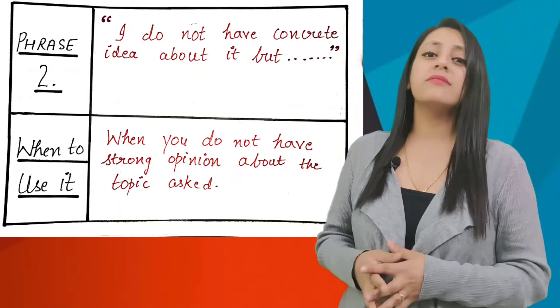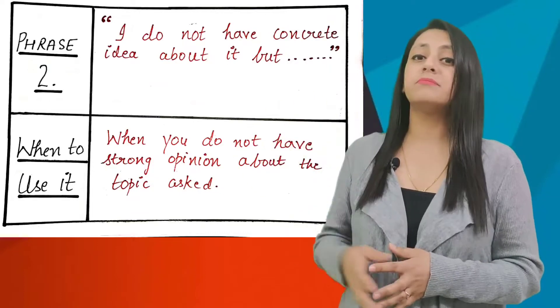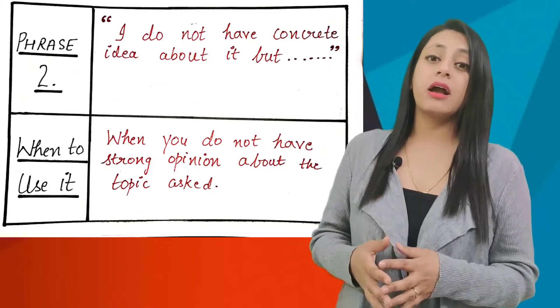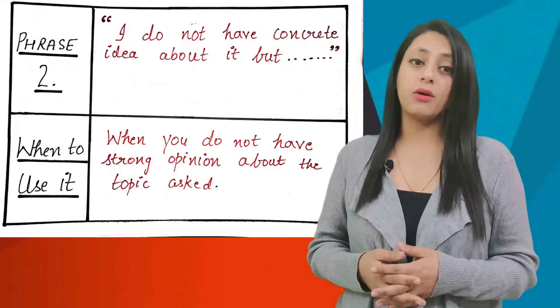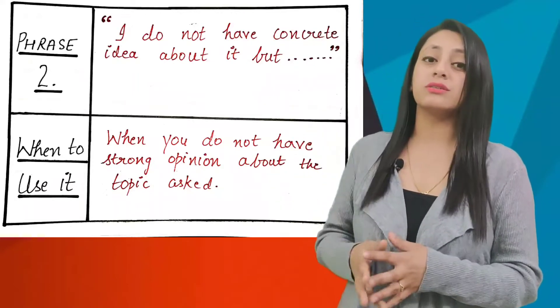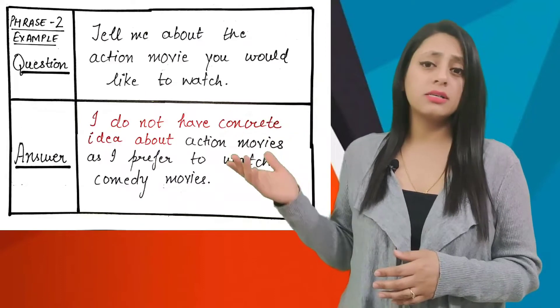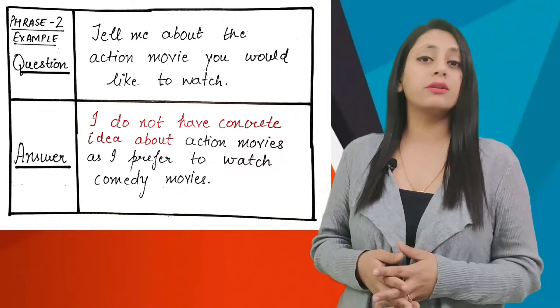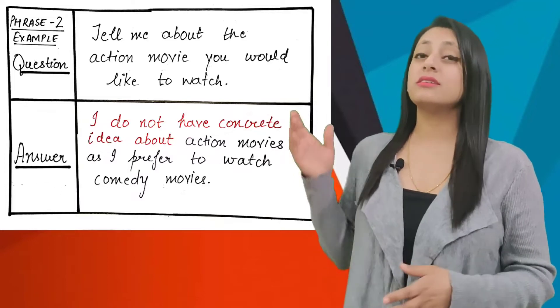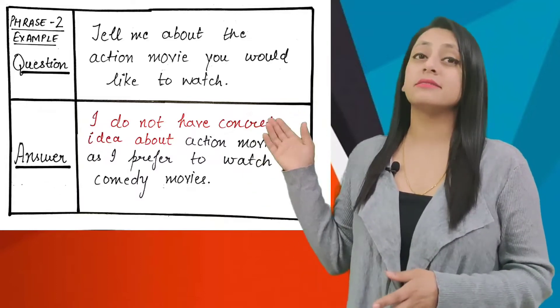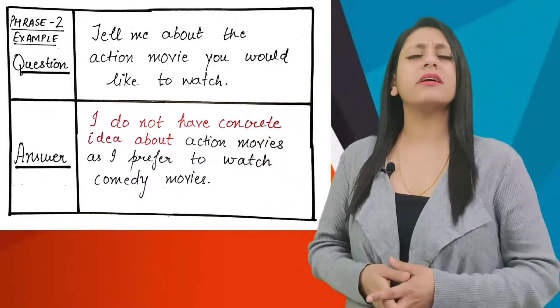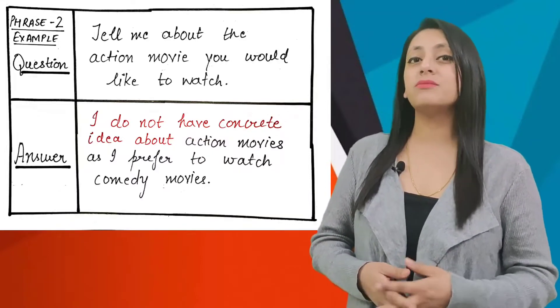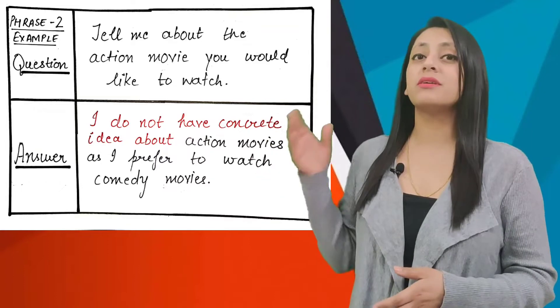The second phrase is: I do not have concrete idea about it but. When to use it? For example, if you are asked about an action movie you would like to watch, you can begin your answer like: I do not have concrete idea about action movies as I prefer to watch comedy movies.